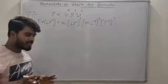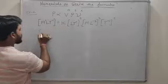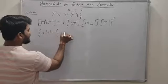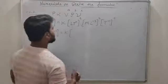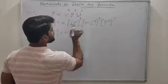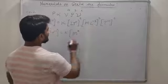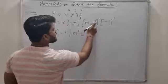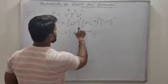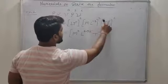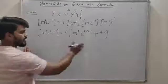दूसरा step — इन तीनों dimensional formulas को एक dimensional formula में modify करना है। M की power B, L की power A, density का dimensional formula M1 L-3, और frequency का T-1। M raised to power B+C, L raised to power A minus 3B, T raised to power minus A minus C — single bracket बनाओ।